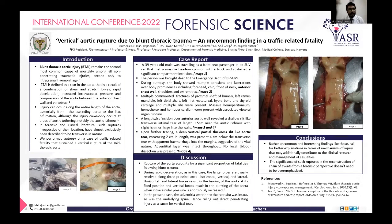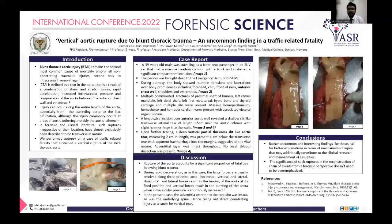We define blunt thoracic aortic injury as a tear in the aorta that results from a combination of shear and stretch forces caused by rapid deceleration, or increased intravascular pressure and compression of the aorta between the anterior chest wall and vertebrae. Injury can occur along the entire length of the aorta, from the ascending aorta to the iliac bifurcation, although injury commonly occurs at areas of aortic tethering, notably the aortic isthmus.